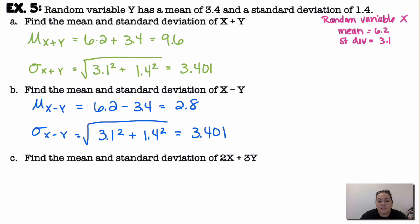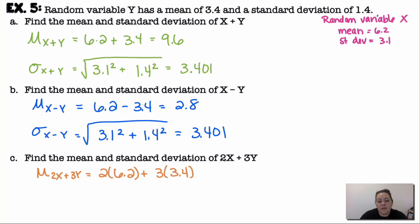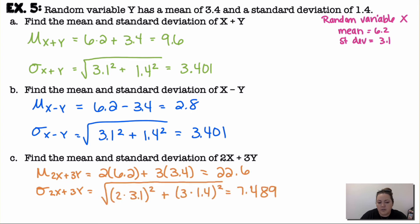To find the mean and standard deviation of 2x plus 3y: multiply the mean of x by 2 and the mean of y by 3, then add them — giving 2(6.2) + 3(3.4) = 22.6. For the standard deviation, multiply each standard deviation by its constant first, then square, add, and take the square root: √((2×3.1)² + (3×1.4)²), giving approximately 7.489.